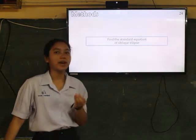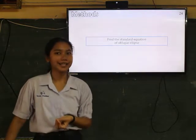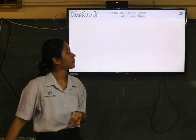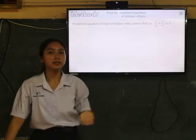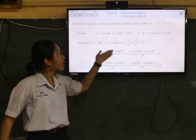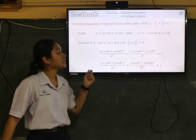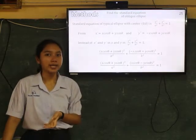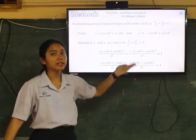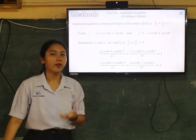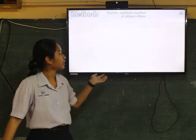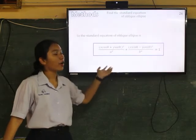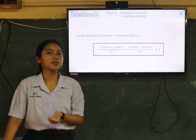Next step is to find the standard form of oblique ellipse. This is the standard form of oblique ellipse with center zero zero. And from previous relationship, substitute x prime and y prime into x and y in this equation. Then solving equation and forming equation until we get like this. And this is standard form of oblique ellipse with center zero zero.